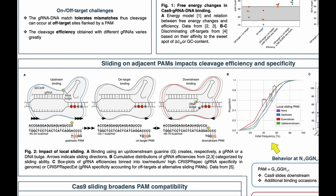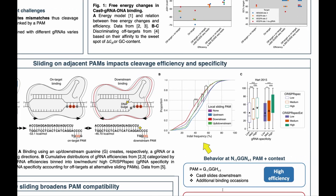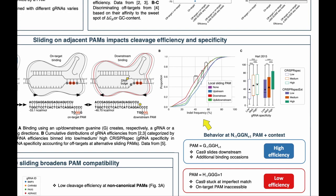In this case, the Cas9 complex will not dissociate from the DNA because the complementarity between the guide RNA and the DNA is too high, but at the same time may not produce cleavage efficiently, and also prevents other Cas9 complexes from binding. Looking at the data, guide RNAs with a downstream PAM (shown in red) have much lower indel frequency compared to those without any adjacent PAM opportunity, while guide RNAs with an upstream PAM have higher efficiency compared to those without an upstream PAM.